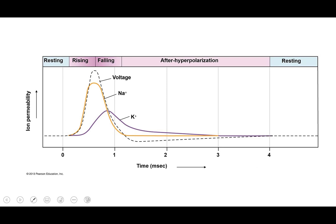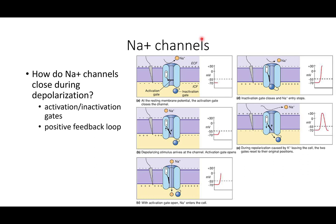Looking at ion permeability as a function of voltage: sodium enters much more quickly and then stops during the falling phase, while potassium permeability lags — those gates open more slowly. The sodium channels have both activation and inactivation gates triggered at the exact same time. There's a positive feedback loop: the more sodium that enters, the further past threshold we go, triggering neighboring channels to open as well. This positive feedback is stopped by the closing of the inactivation gate and potassium leaving the cell.